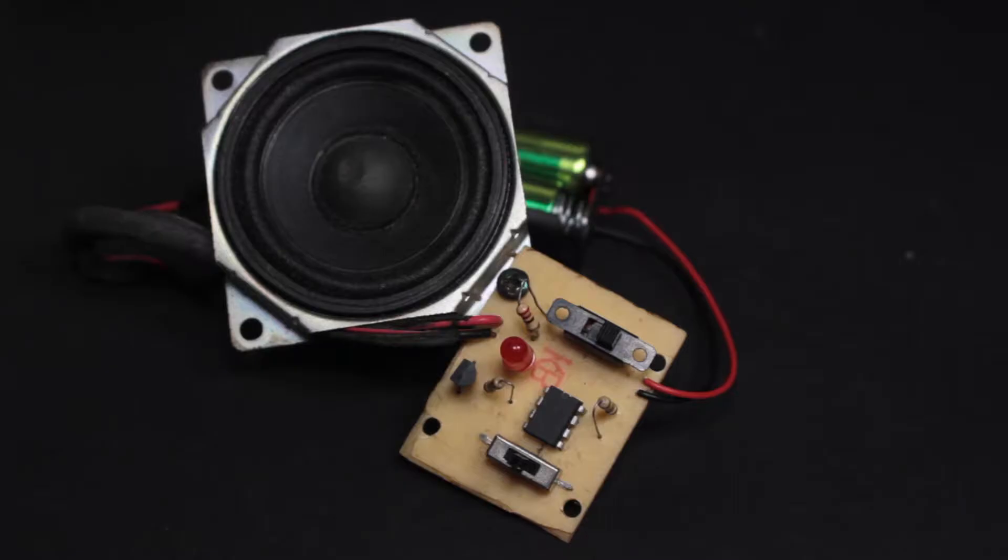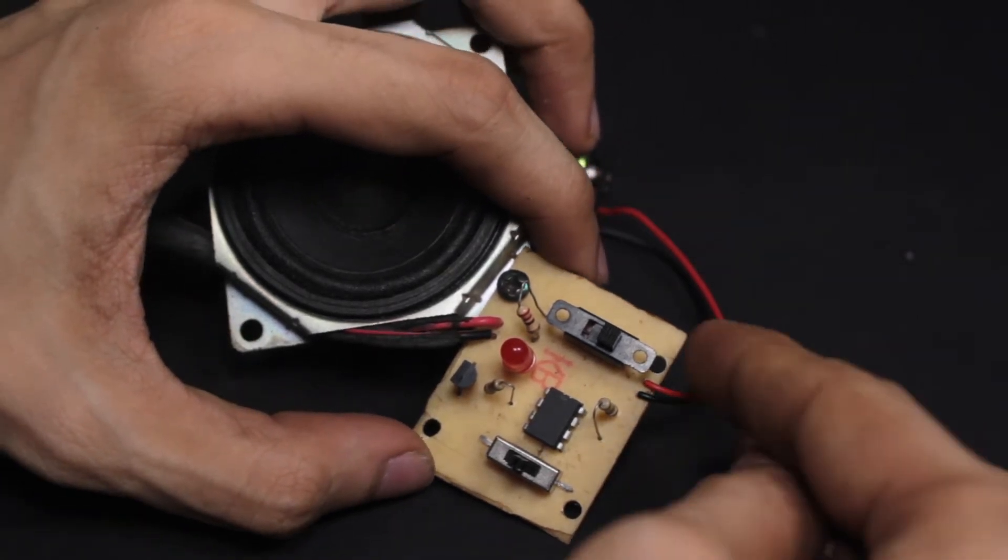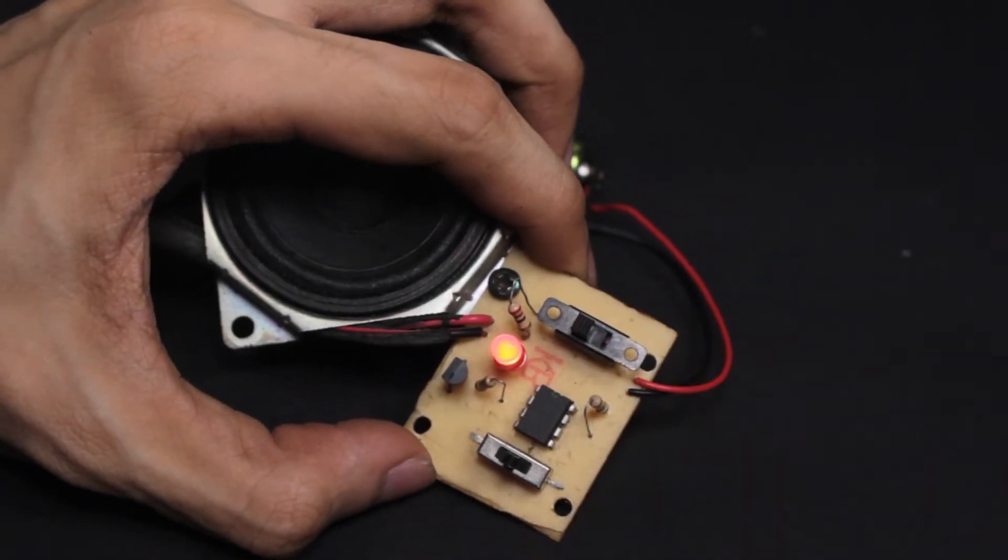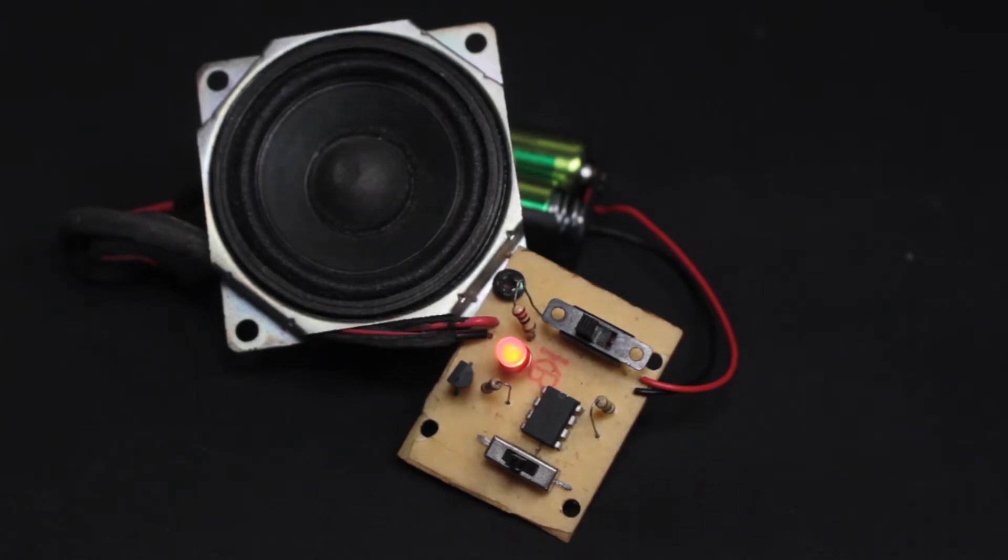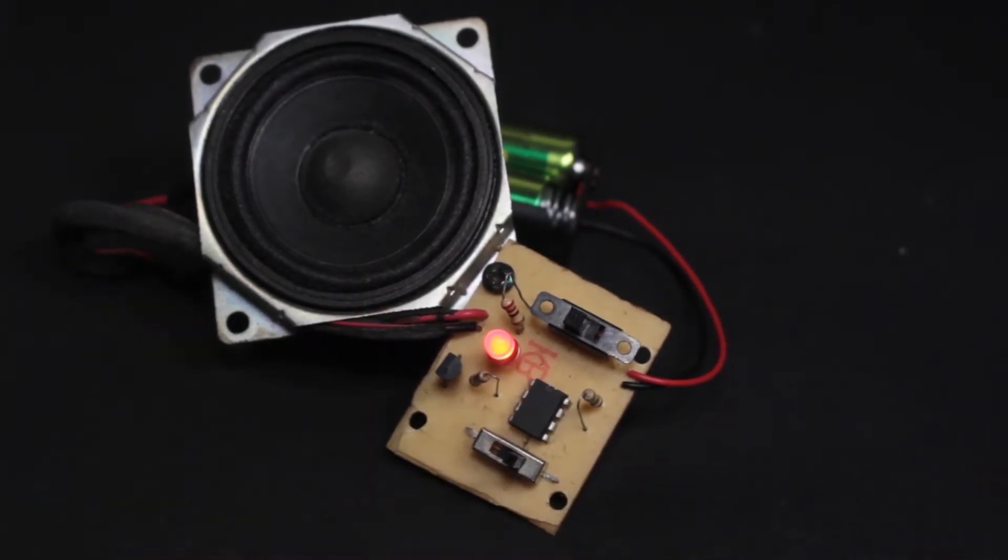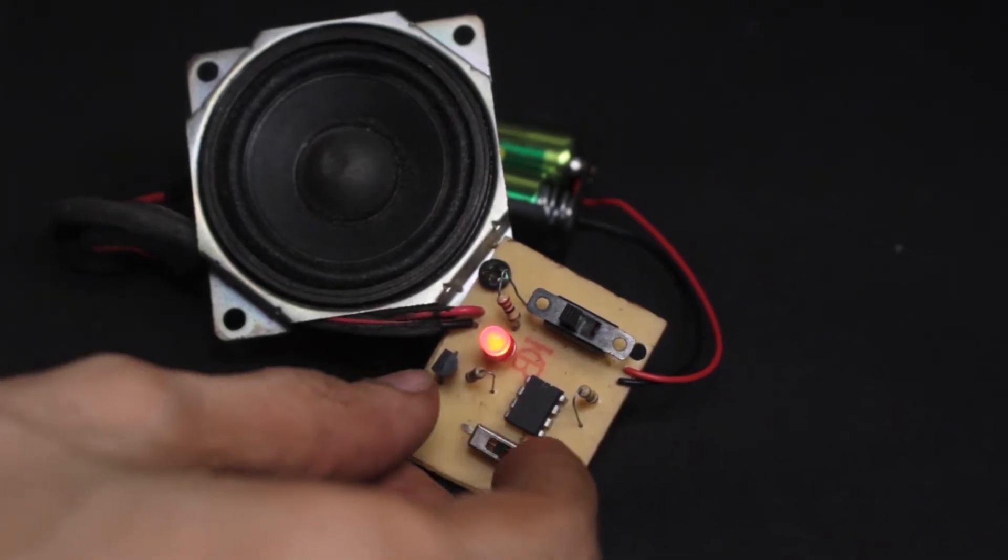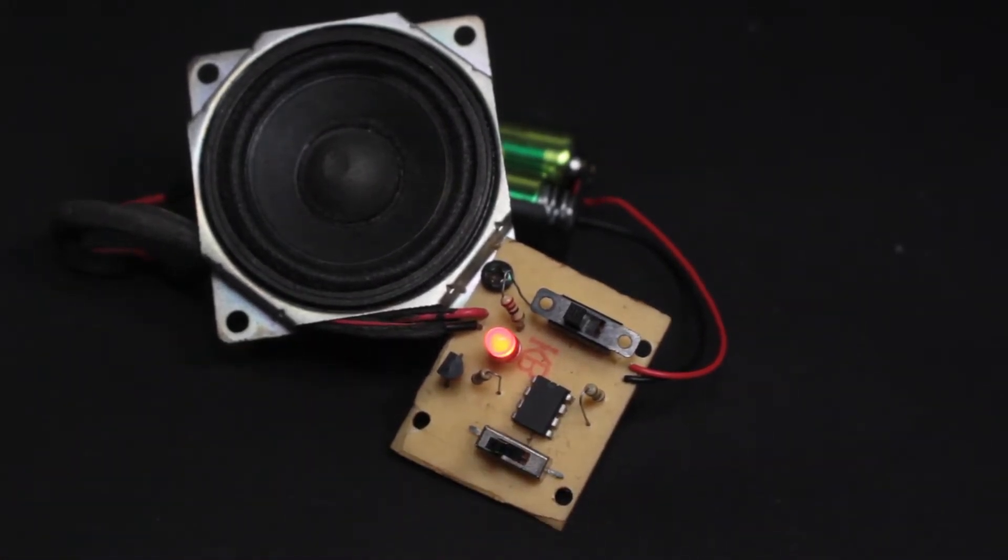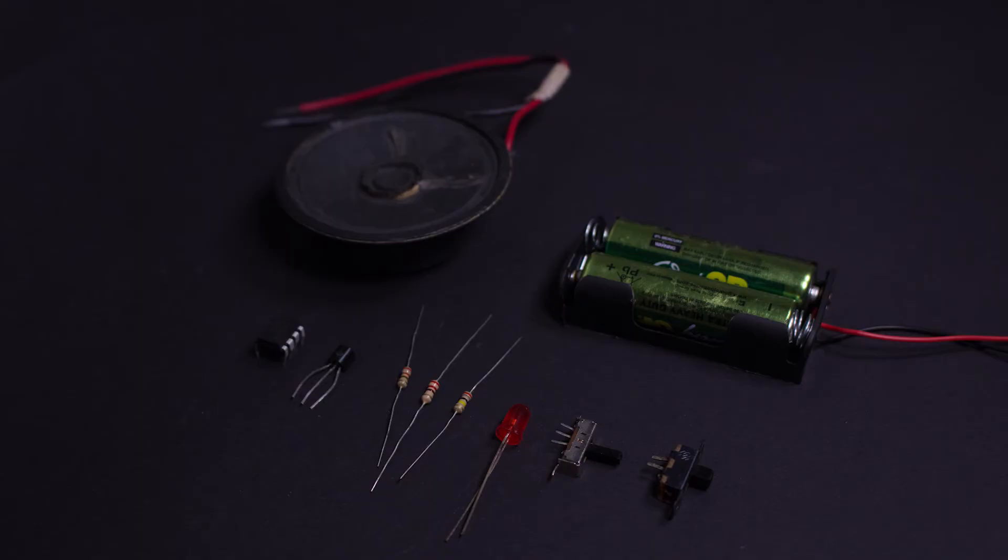In this video I'm going to show you how to make a siren generator using the UM 3561. It can produce a police, ambulance, as well as a fire engine siren. You will need the following components to build this circuit.